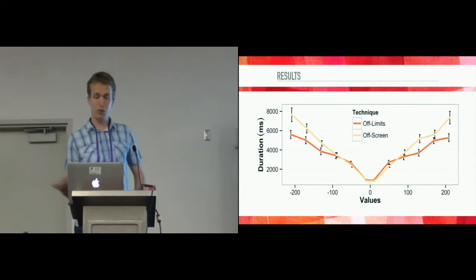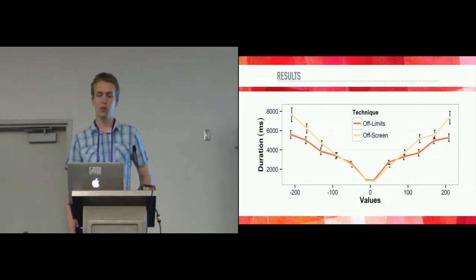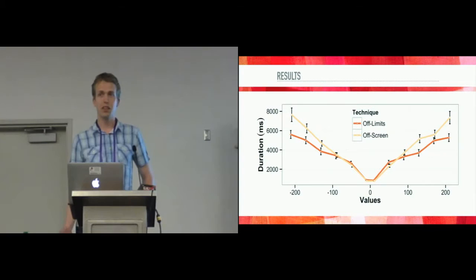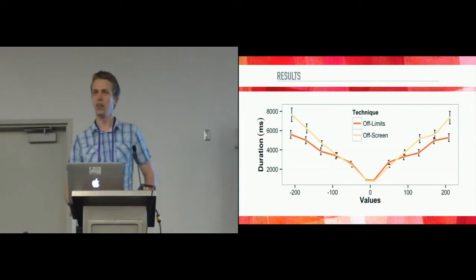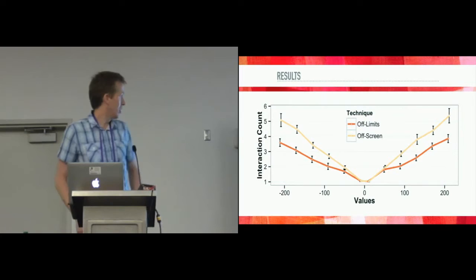Taking a look at the results, we saw that off-limits was generally faster than the naive off-screen approach when targets moved further away from the display. That's also what we expected, since we now allowed people to actually point further away. People actually did start taking advantage of a much larger part of off-screen space than before. And people directly stated that they did so because they knew they wouldn't go away from where they expected to be.